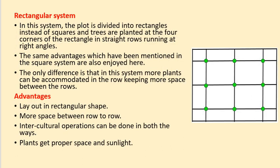Next is the rectangular system. In this system, the plot is divided into rectangles instead of squares, and trees are planted at the four corners of the rectangle in straight rows running at right angles. The same advantages as the square system apply. The only difference is that more plants can be accommodated in the row while keeping more space between the rows. Advantages: layout is simple; more space between row to row; intercultural operations can be done in both ways; and plants get proper space and sunlight.